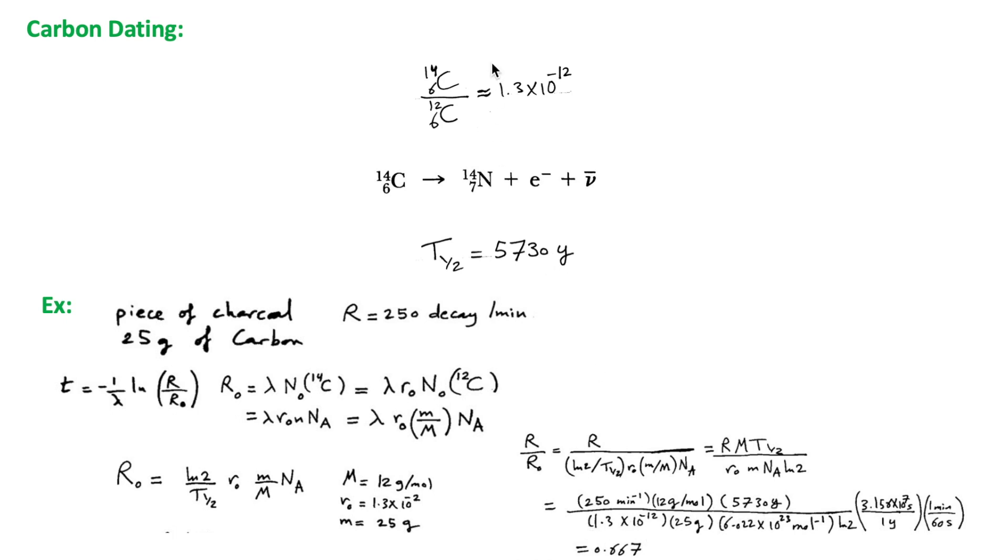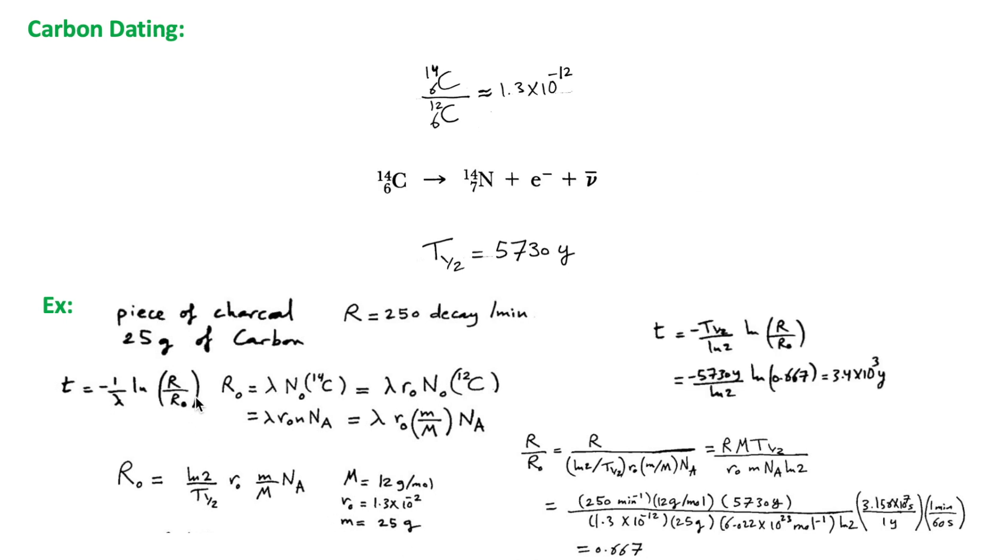And Avogadro's number, and we convert minutes here to seconds and years to seconds, and we get 0.667. Substituting here, we get T equal to 3.4 times 10 to the 3 years.